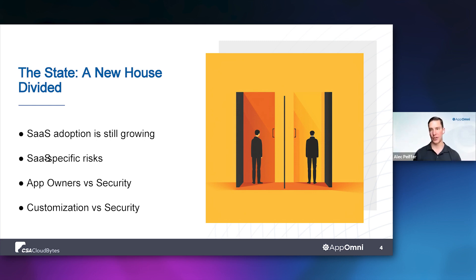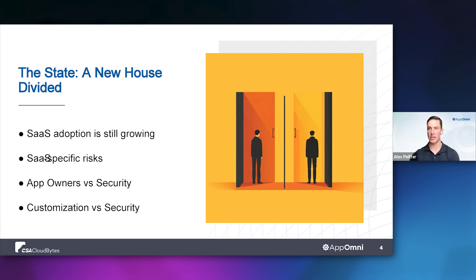For customization versus security: enterprises want vendors to build customization into their products, so vendors do so. But at the same time, that increases the risk of misconfiguration-based risk. Right now, the push is for continued customization and not necessarily toning down product functionality for a more secure product. Holistically, we just see the trend moving more and more towards customization, which means more and more misconfiguration-based risk.